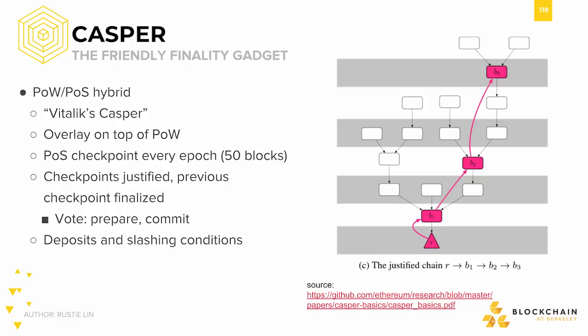In FFG, we carry on with proof-of-work as normal. However, every 50 blocks — called an epoch — we run a round of proof-of-stake, which consists of prepare and commit phases where validators vote on which chain they believe to be canonical. Each round of proof-of-stake at an epoch is called a checkpoint, and checkpoints are first justified, and then if another checkpoint is built on top of it, that previous checkpoint is considered finalized. If block B is finalized, then the blockchain cannot reasonably revert back to a time before block B. This is also advantageous because we can now consider only the justified chain rather than the entire Ethereum blockchain. Casper FFG also implements deposits and slashing conditions, which we'll explain in next week's lecture about proof-of-stake and crypto economics.